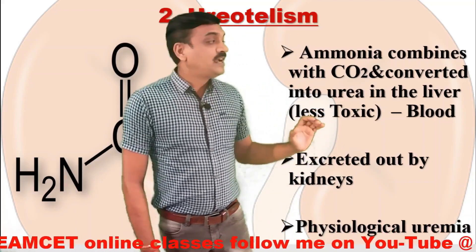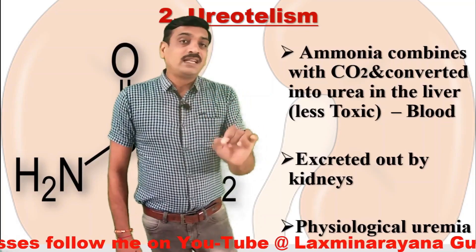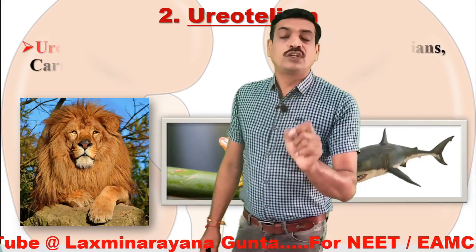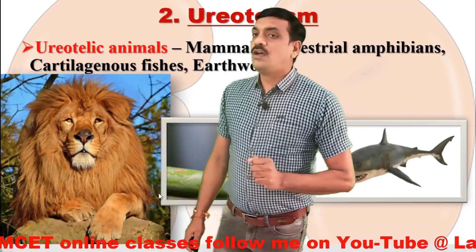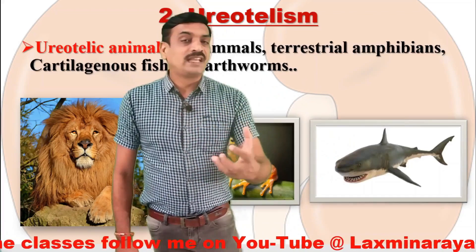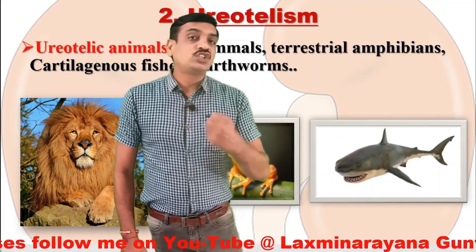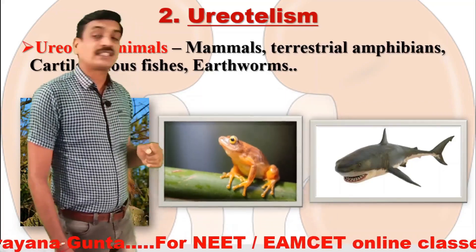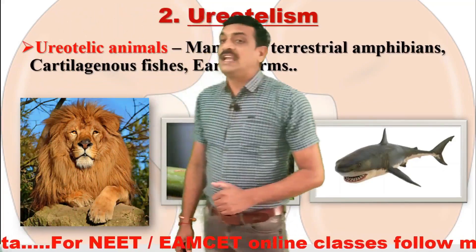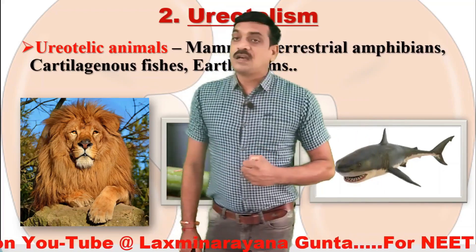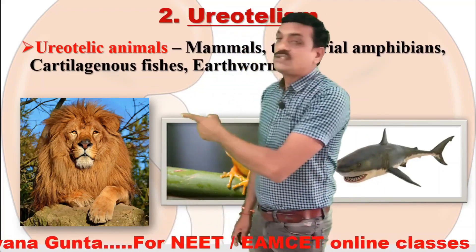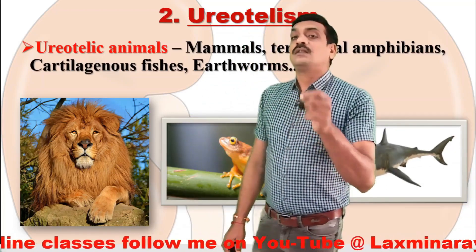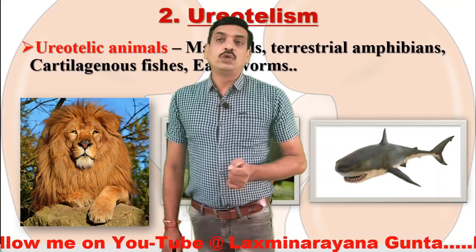The examples for ureotelic animals are all mammals — they excrete urea as their chief nitrogenous waste product. Terrestrial amphibians also excrete urea as they lead most of their life on land. Similarly, cartilaginous fishes also exhibit ureotelism. Along with these, earthworms also exhibit ureotelism.